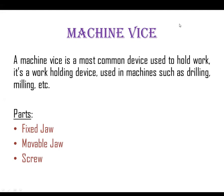Before jumping towards the drawing, we should know what a machine vise is. A machine vise is a most common device used to hold work — we can say it is a work-holding device used in machines such as drilling, milling, etc. It is used to hold the job.